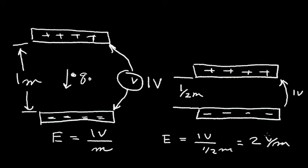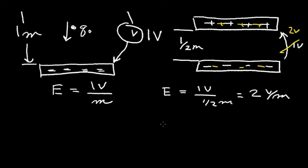Now, if I wanted to increase the electric field even more, I could add more charge, and I could increase this voltage from one volt to two volts. In this case, I'd have an electric field that would be two volts divided by one half of a meter, or four volts per meter.